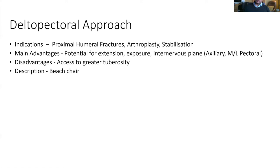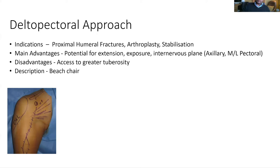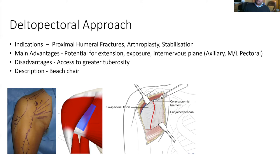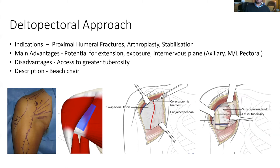When describing the deltopectoral approach, the patient will be in a beach chair position. Landmarks are marked from the coracoid process down towards the deltoid attachment distally, approximately 10 to 15 centimeters. Once through the fat and fascia, find the interval between the deltoid and the pec major — there's usually a fat stripe in between and the cephalic vein also sits in this area, so take the vein laterally and you're down to the clavipectoral fascia. Feel for the coracoid and visualize the conjoined tendon underneath, stay lateral to it, and incise the fascia to get down to the subscapularis tendon. In trauma, that's probably the end of your approach, as you'll be looking for the fracture fragments. In elective arthroplasty, you would then tenotomize the subscapularis tendon.